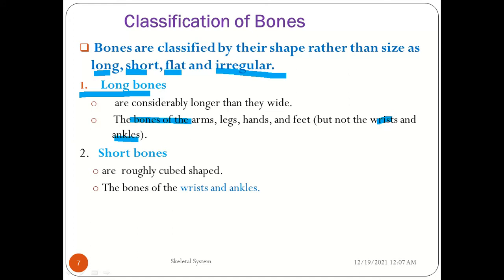Short bones are roughly cube-shaped, meaning their length, height, and width are approximately equal. The bones of the wrists and ankles fall into this category. For example, wrist bones are carpal bones such as the scaphoid.